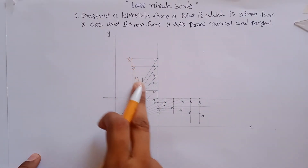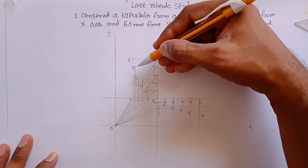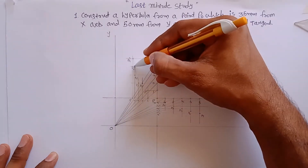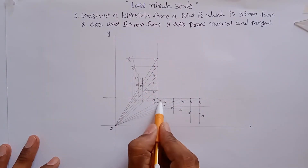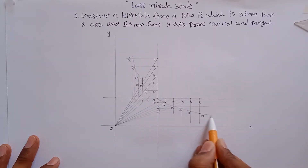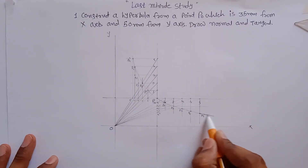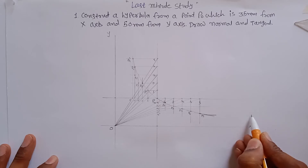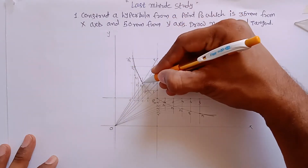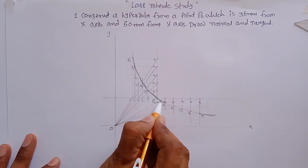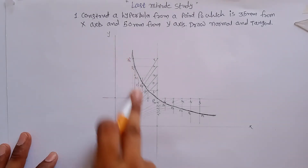Now that you have all the points, construct the hyperbola with very fine, smooth curves passing through each and every point. The end portions of the hyperbola must be parallel to the x-axis and y-axis. Draw it dark at the end to clearly show the curve — this is the completed hyperbola using the rectangle method.